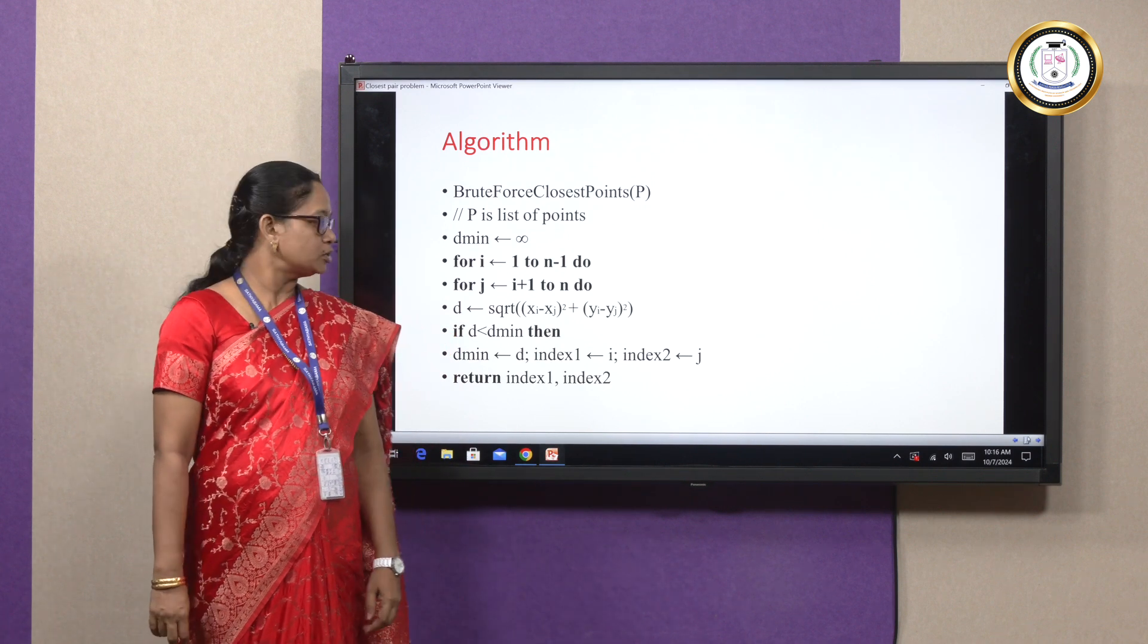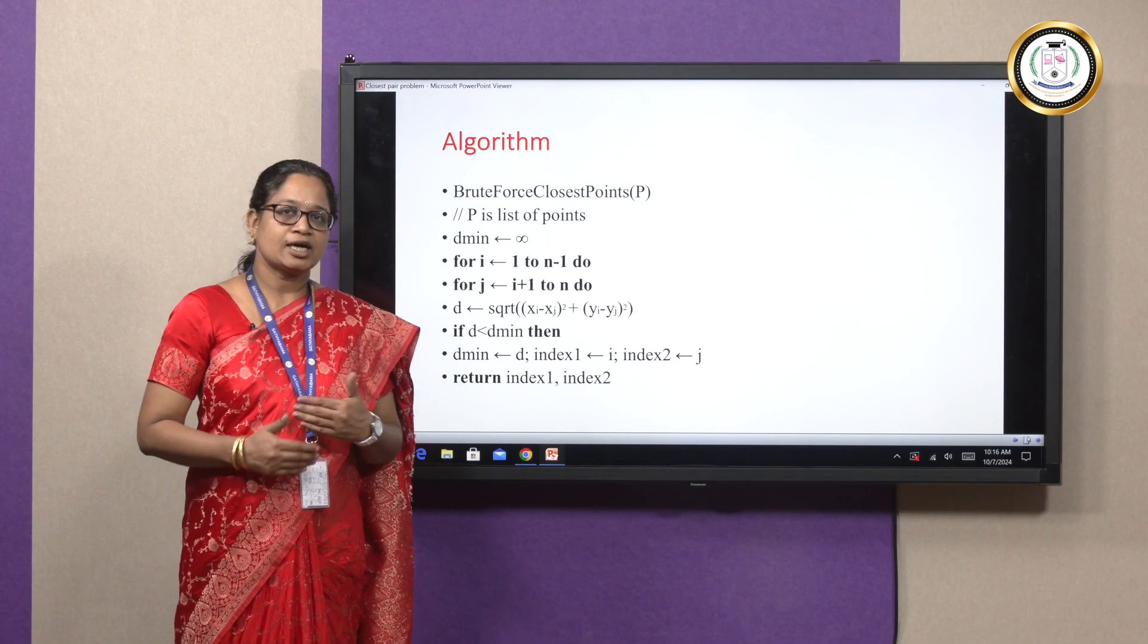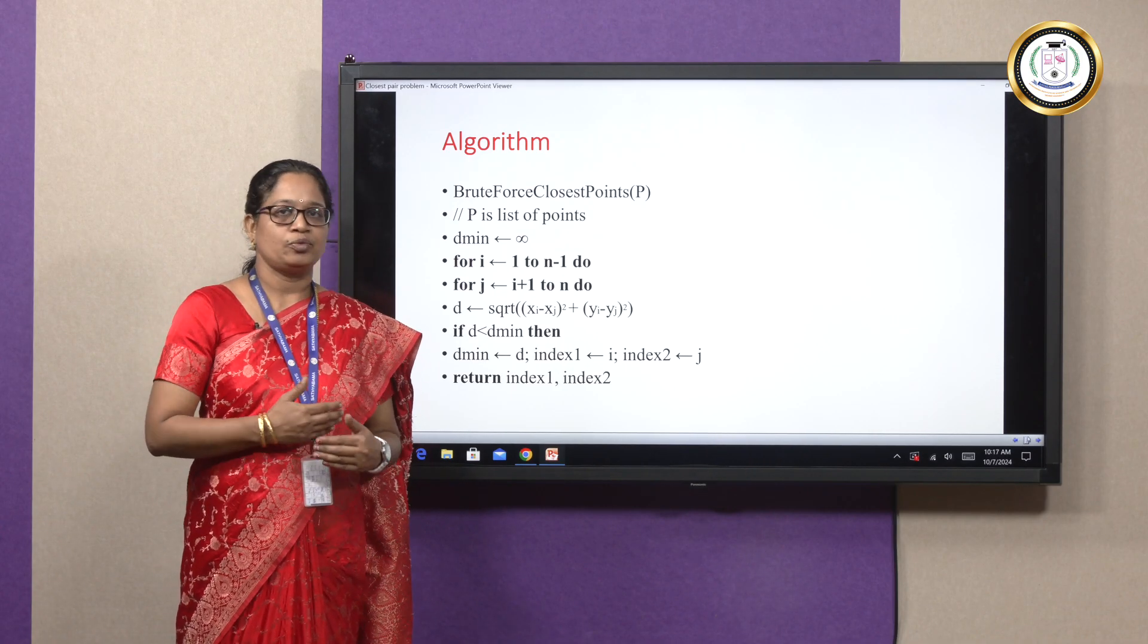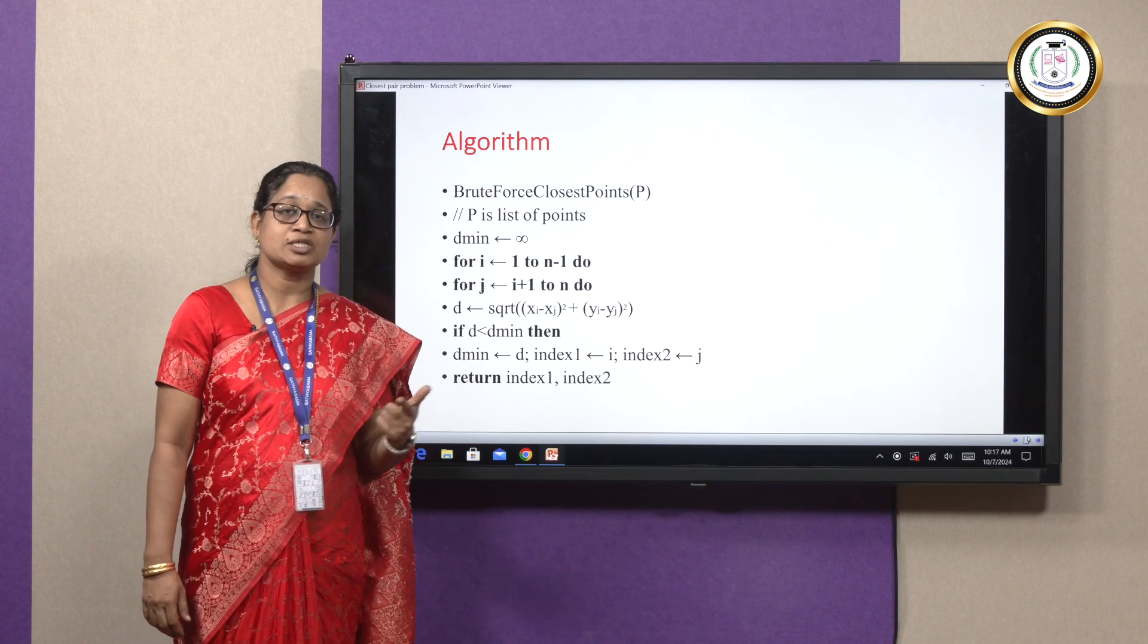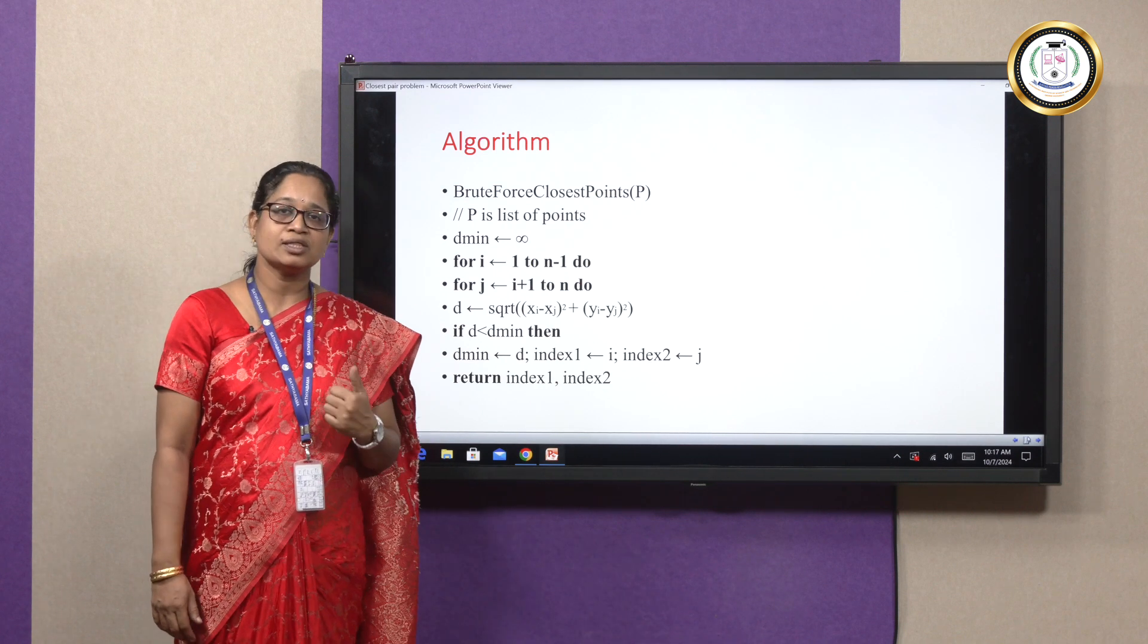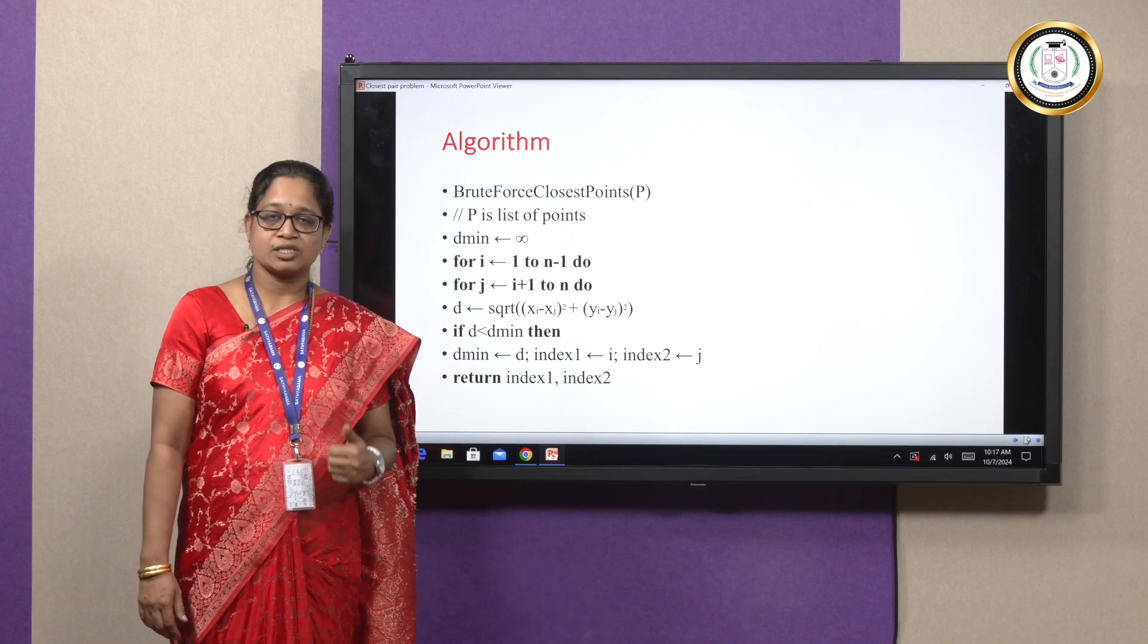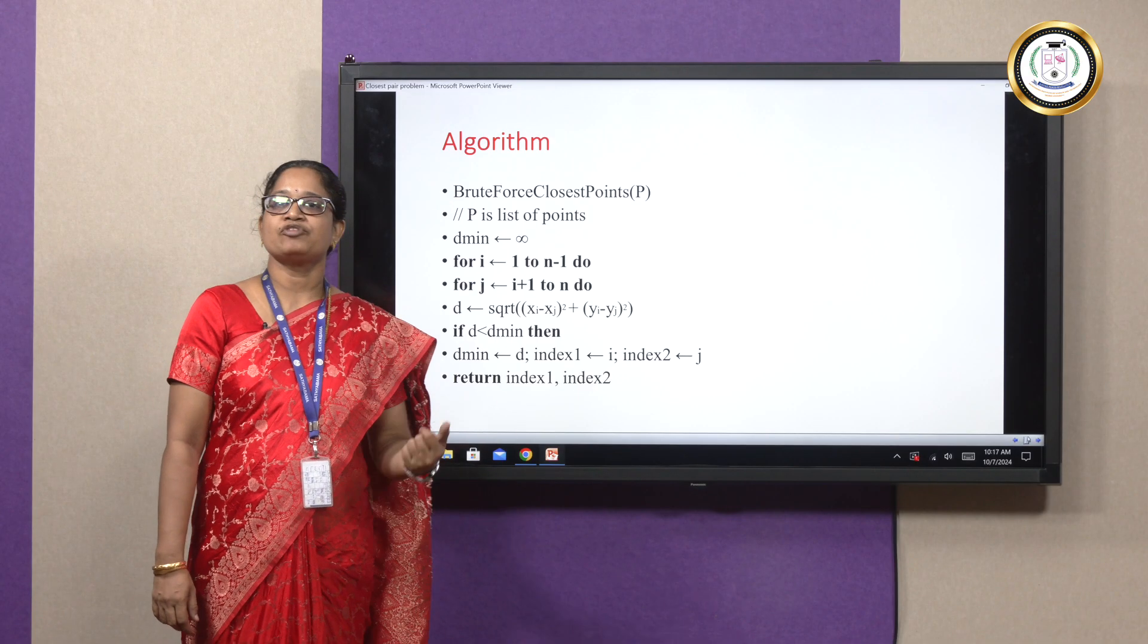Inside the nested for loops, we are finding the Euclidean distance between two pairs of points: square root of (xi - xj)² + (yi - yj)² and the result is stored in a variable d. Now we are checking the condition if the distance computed now is less than the minimum distance that is already initialized to infinity. If this distance is less than the previously initialized distance, then update the minimum distance as d, i will be index 1 and j will be index 2, return the values of index 1 and index 2.